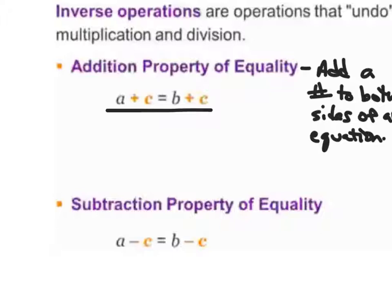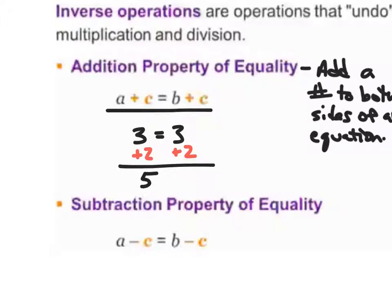Let's talk about a true statement. Let me write an equation that says 3 is equal to 3 — that's a true statement. Now if I add something to the left side, say if I add 2 to the left side, using the addition property of equality I would also have to add that value to the right side. That would give me another true statement: 5 is equal to 5.